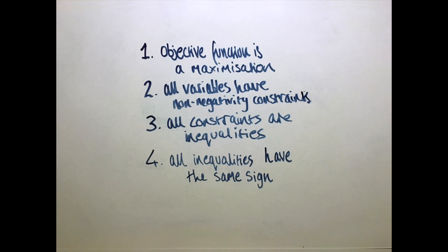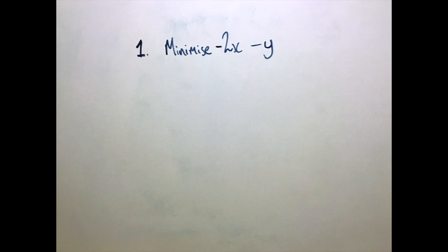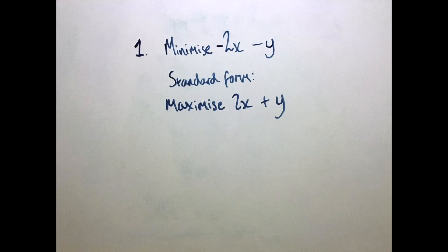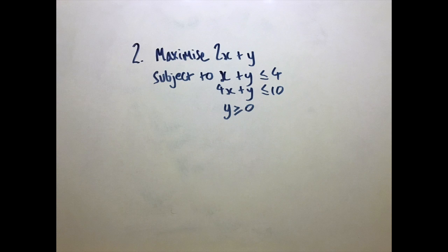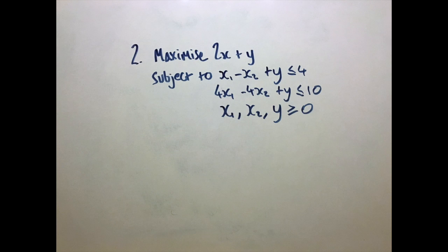If a problem involves minimizing an objective function, you can convert it to the standard form by simply saying we want to do the opposite. If a variable x in the constraints doesn't have a non-negativity constraint, simply change it to x1 - x2 and add x1 ≥ 0 and x2 ≥ 0 to the constraints.